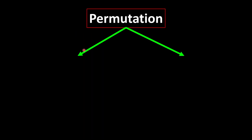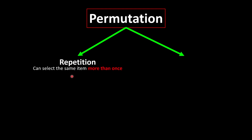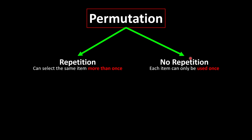We have two kinds of permutations. The first one is permutation with repetition, which means that every item can be used more than once. The second one is permutation without repetition, which means that each item can only be used once.